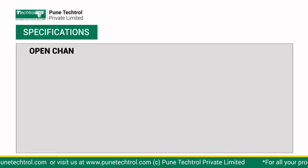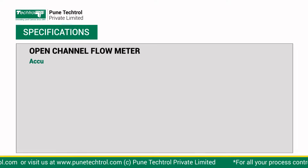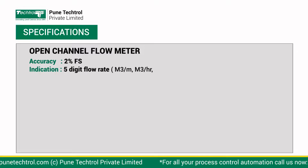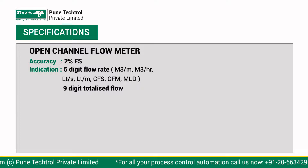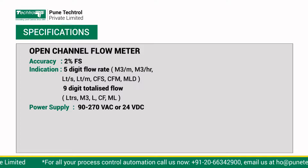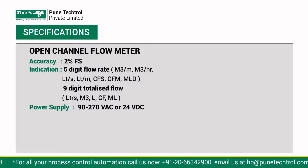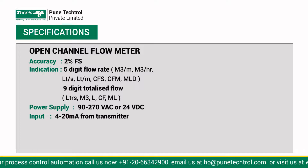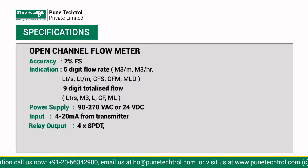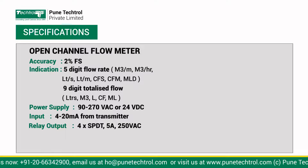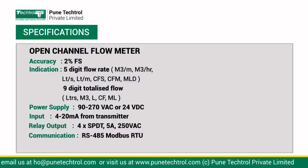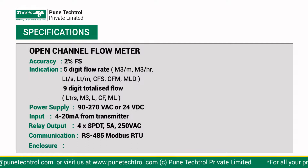Specifications for the open channel flow meter: 5-digit flow rate and 9-digit totalized flow in various units. Power supply: 90 to 270V AC or 24V DC. Input: 4 to 20mA from transmitter. Relay output: 4 SPDT, 5A, 250V AC. Communication: RS485 Modbus RTU. Enclosure: panel mounted.